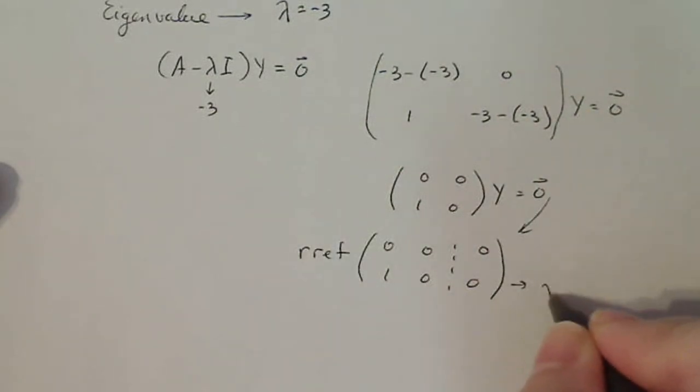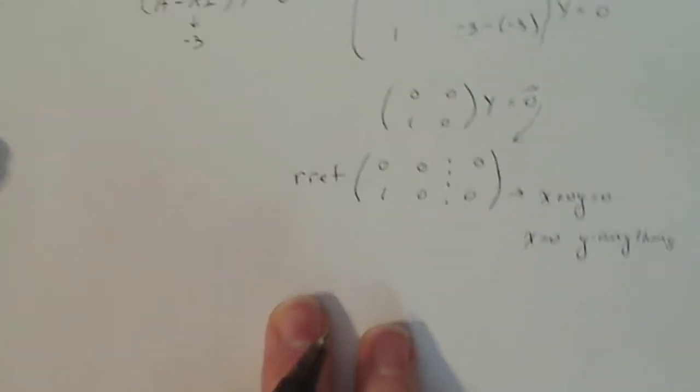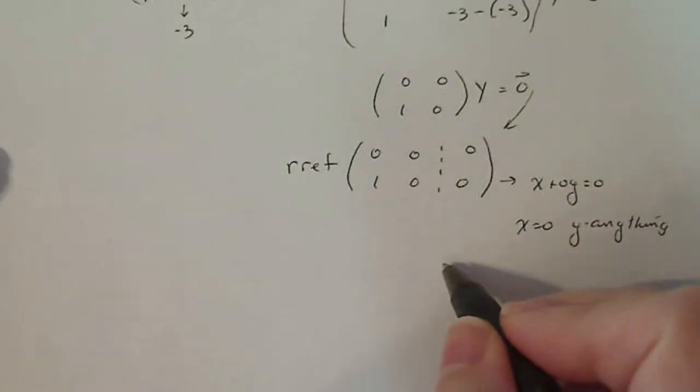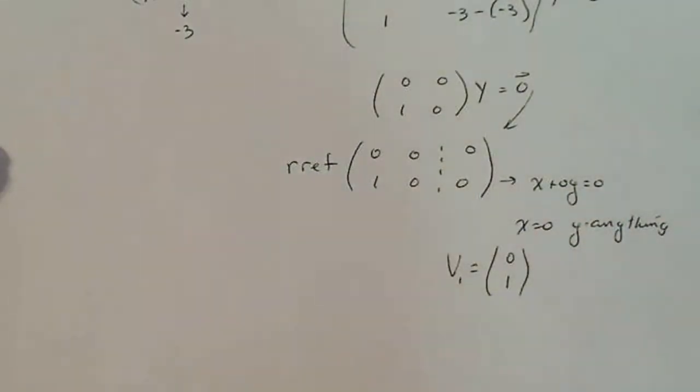I can interpret this as 1x plus 0y equals 0. This implies that x has to be 0, but y can be anything. Anything I want, because no matter what it is, that equation is still going to be true. So if I make my choice, I'm going to let v1, x equals 0, y be 1. I mean, you can make y minus 42, but why would you want to? Just keep it simple, straightforward.